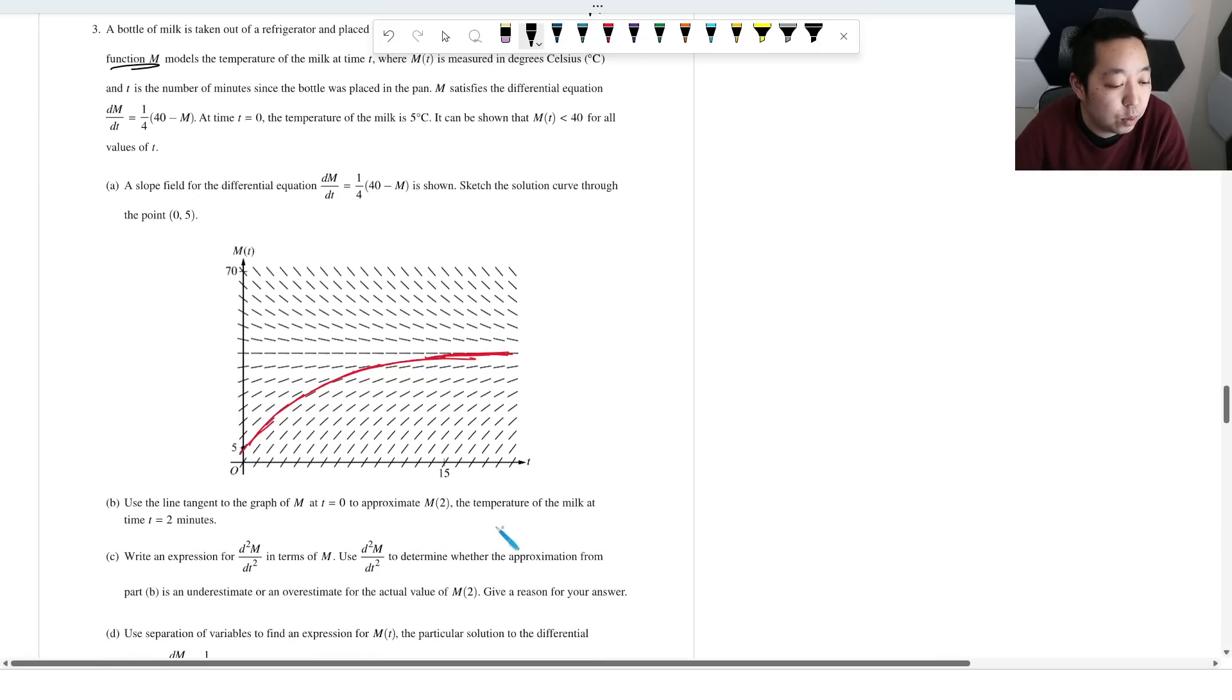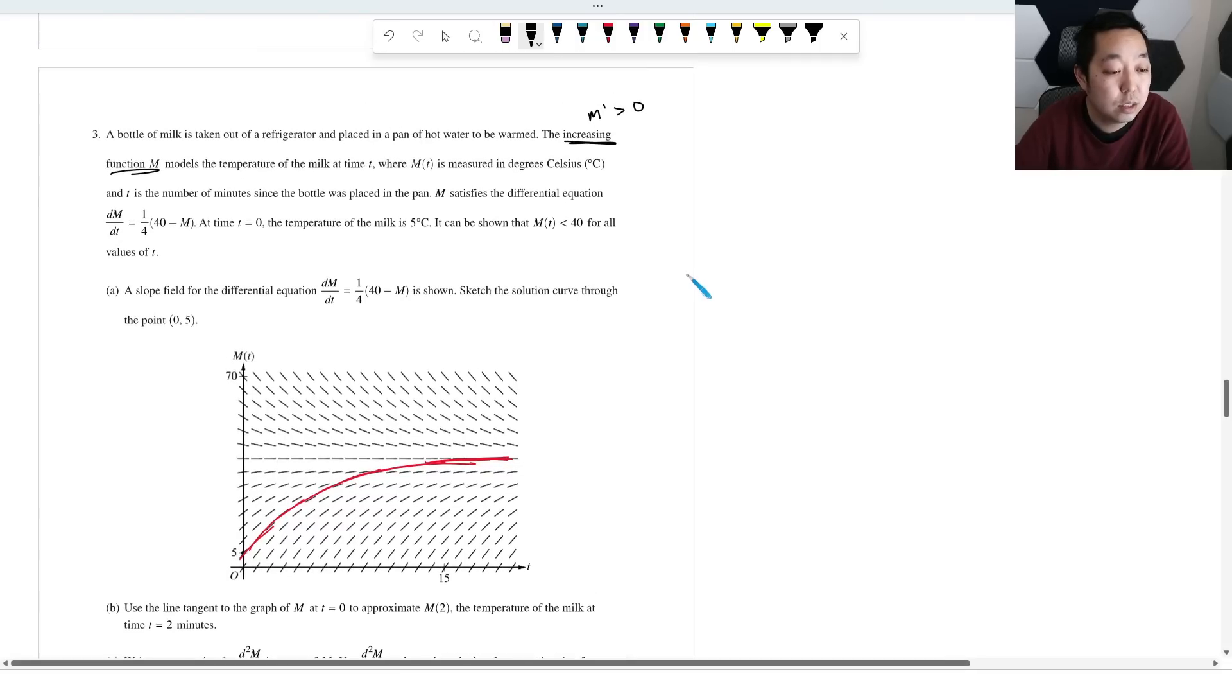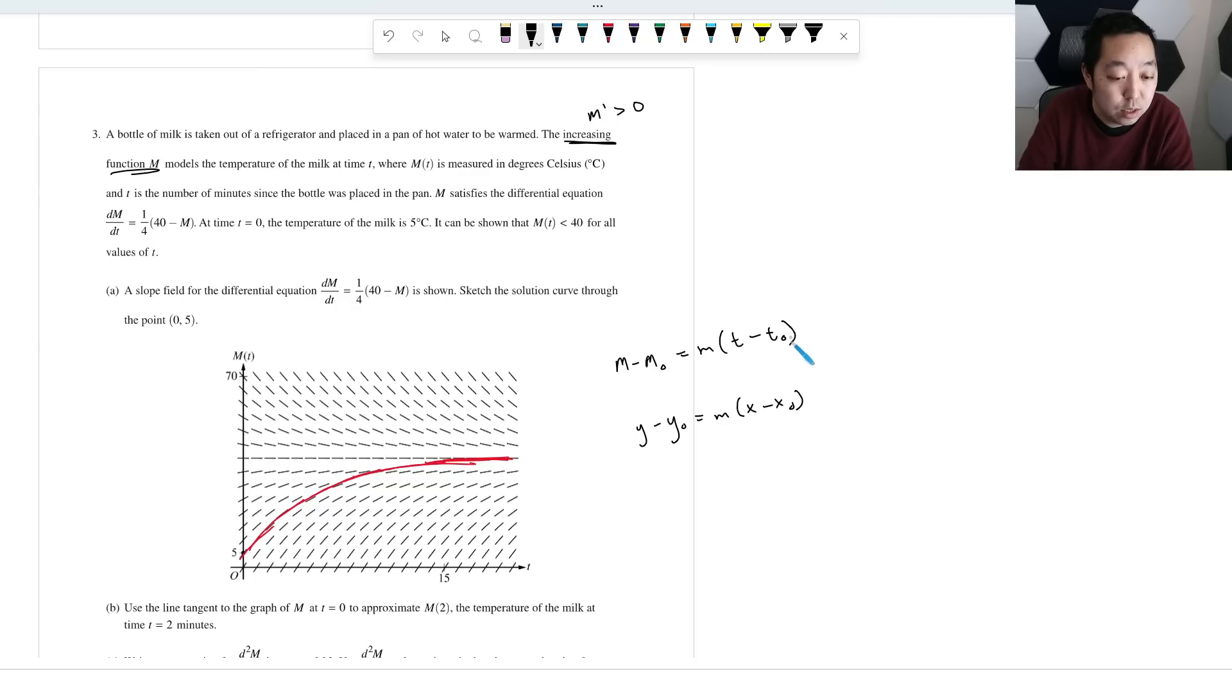Use the tangent line of the graph to approximate M of 2, the temperature of the milk. So we want to first create our tangent line equation, right? So this is going to be M minus M zero, or you can do Y minus Y zero if you want. That's what I usually do. M times X minus X zero. It's just we're using T instead. So we just do T minus T zero. It's almost the same things, but you just got to use the Y and the X variables kind of separately there because that's Y and that's X.